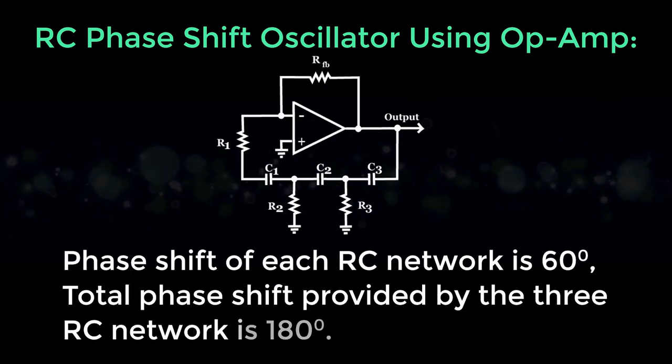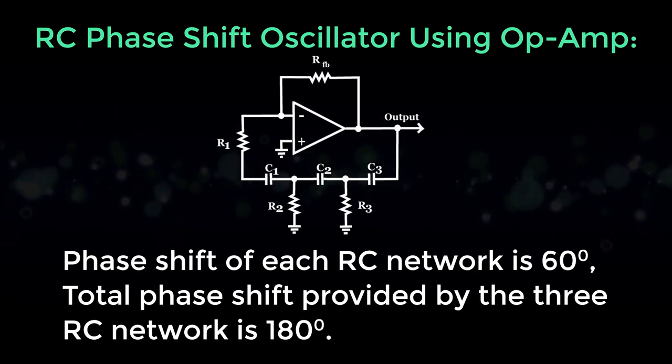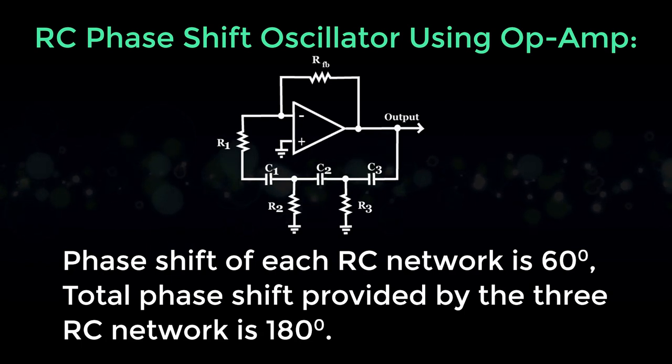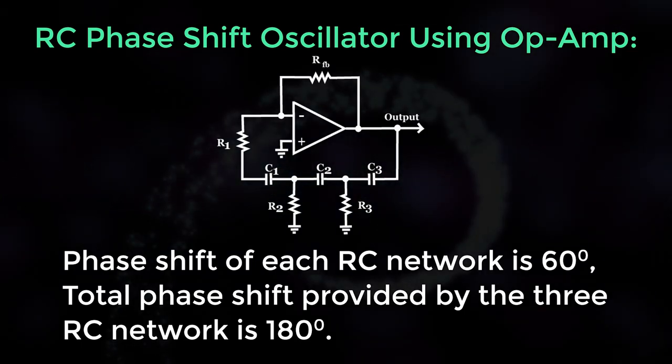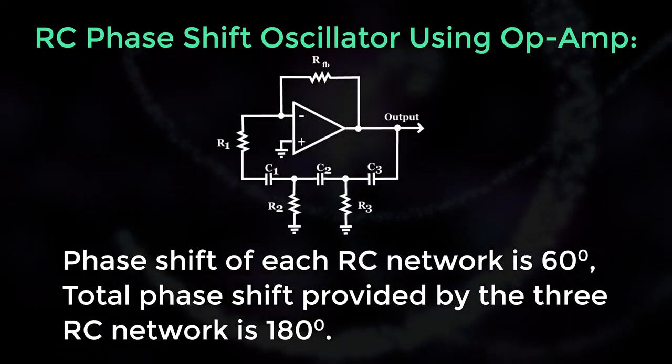The frequency of oscillators can be changed by changing the capacitor. The frequency RC network has a phase shift of 60 degrees each. Hence the total phase shift provided by the three RC network is 180 degrees.